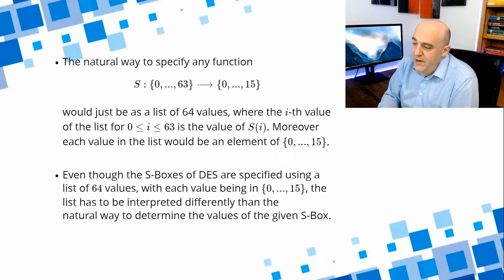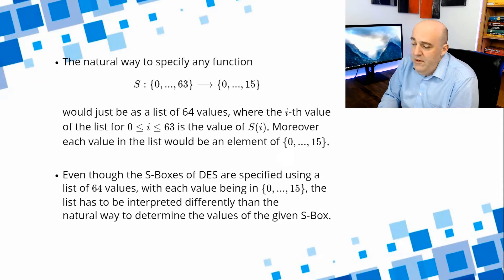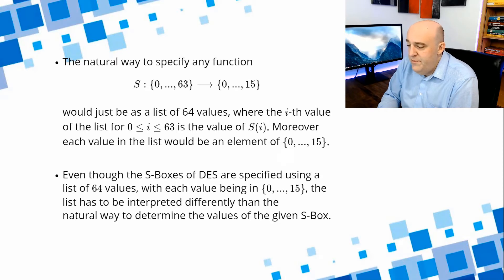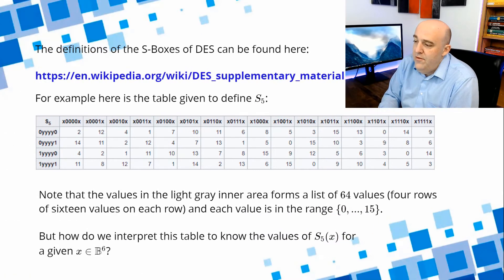There's no way this function could be a bijection, because these sets have different cardinality. It turns out this function is onto but not one-to-one. We can think of the domain of each function SI as the set of integers from 0 up to 63, and the range as the integers from 0 to 15. The natural way to specify any such function would just be to list all 64 values that it takes, where each element is a number between 0 and 15. Even though that's the natural way, the S-boxes of DES are not specified that way — they have their own way. Nevertheless, the S-boxes are specified with a list of 64 values; it's just the interpretation of the list we have to think about.